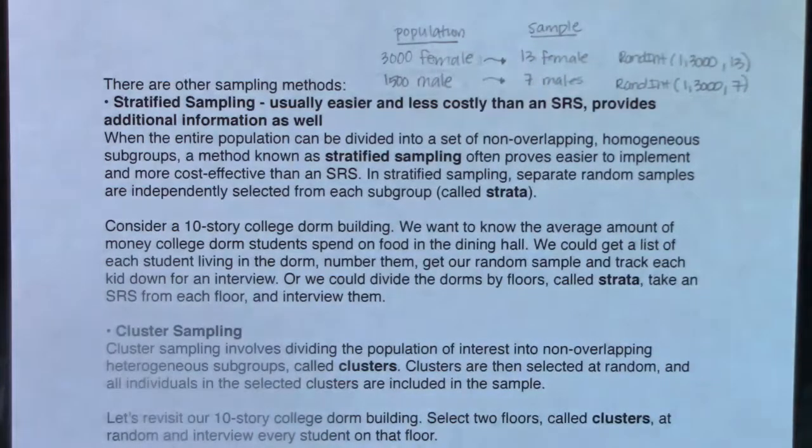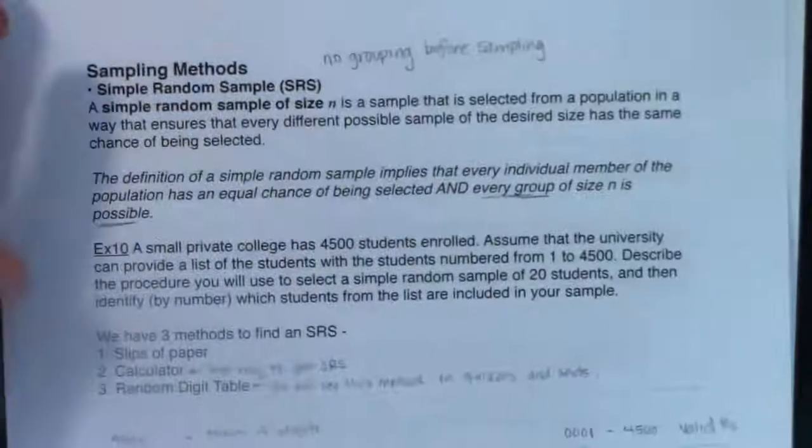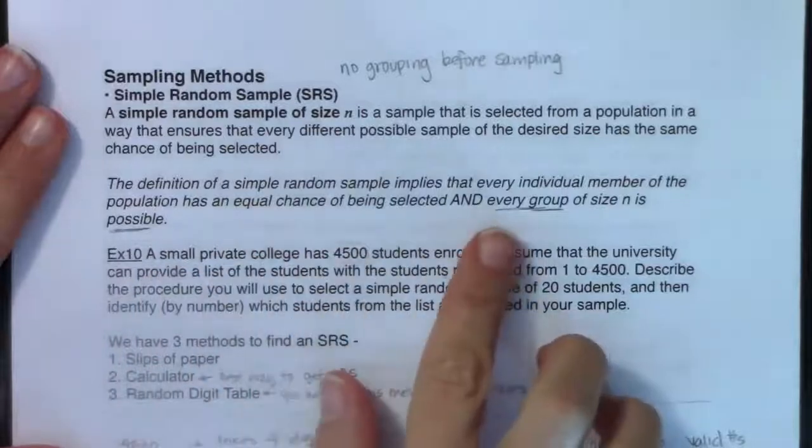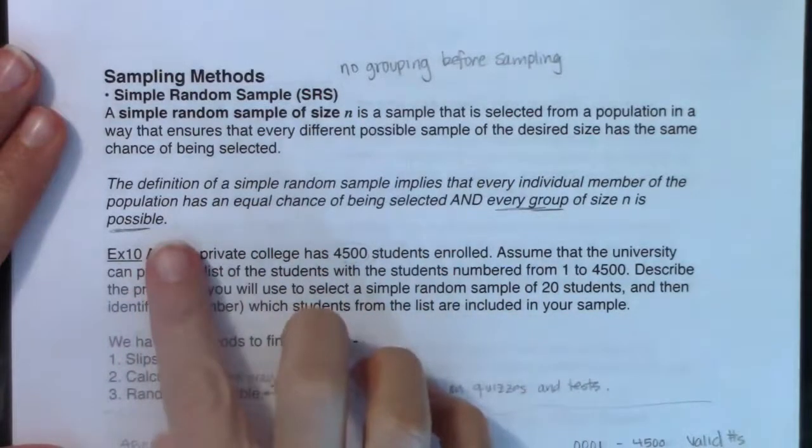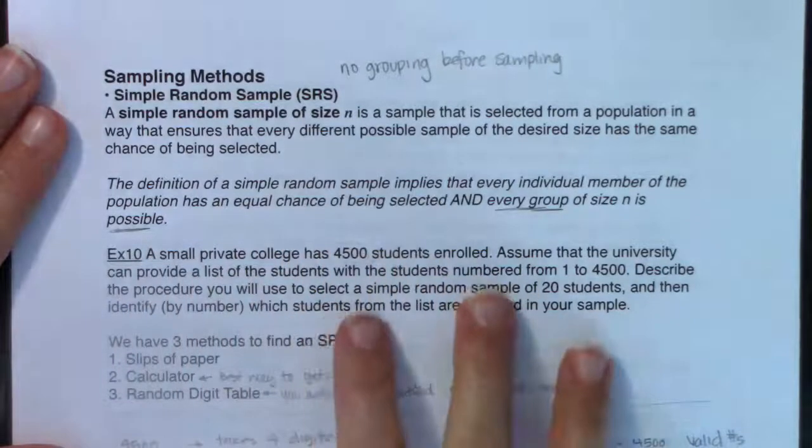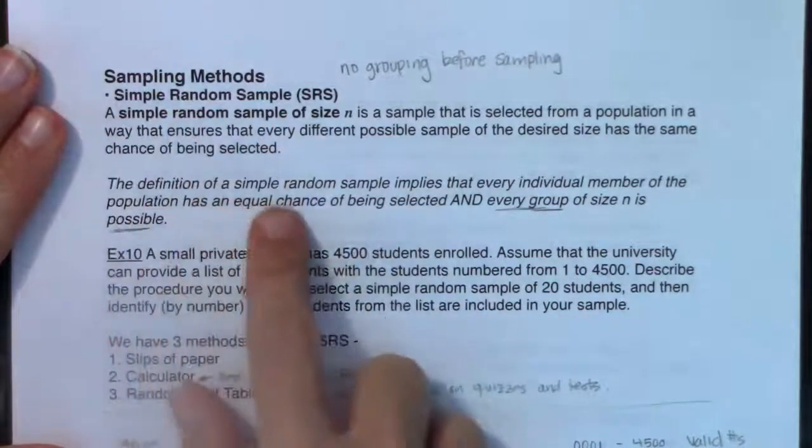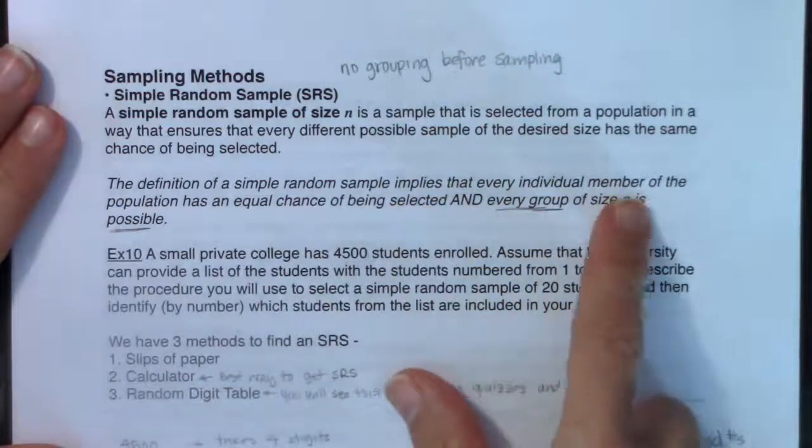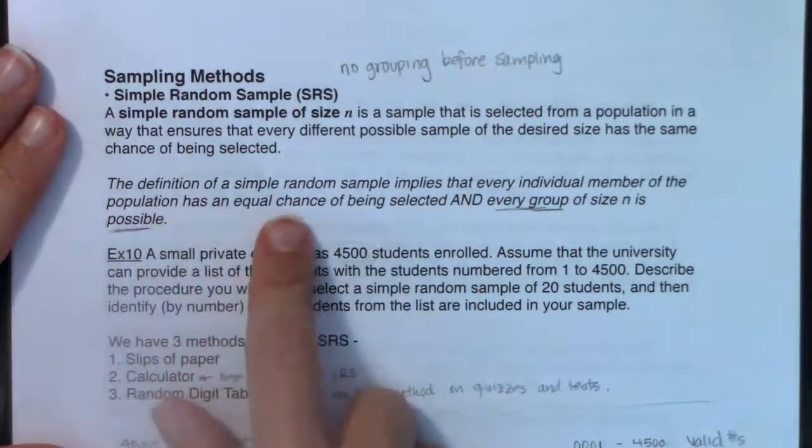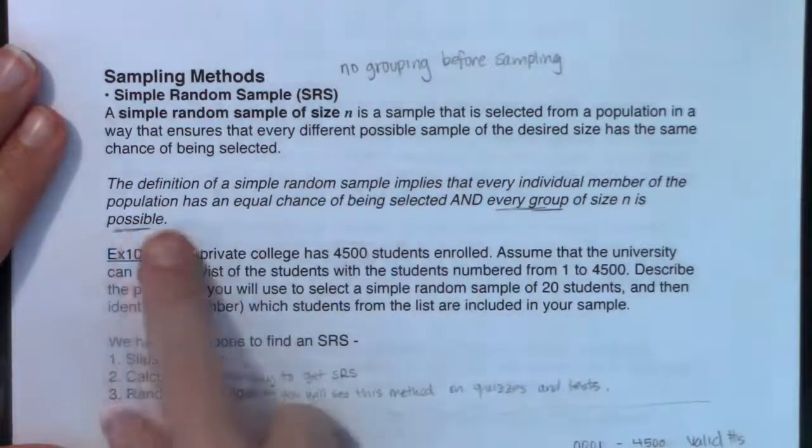So again, I broke my population into non-overlapping homogeneous groups that we're going to call strata. So here's my first strata of female, second strata of male, and I took an SRS inside each of those strata. So you're still using the SRS method, but you've grouped something ahead of time.